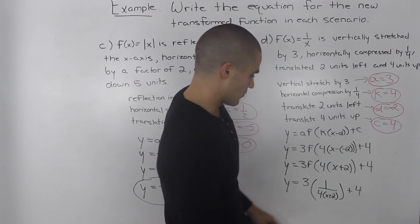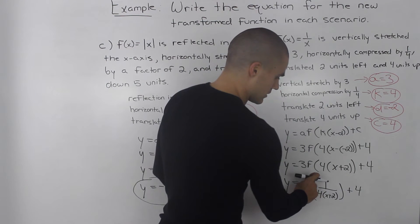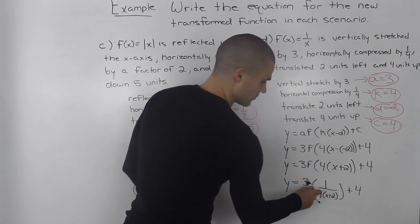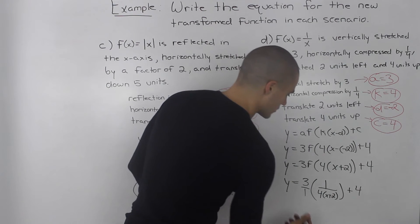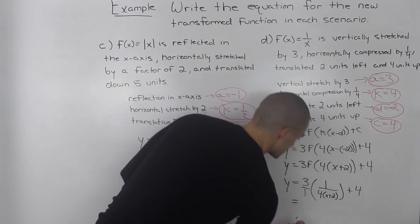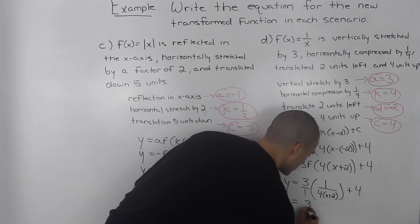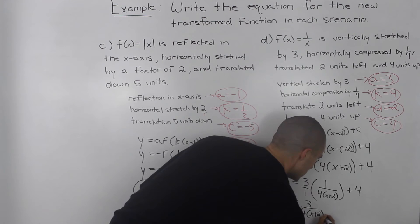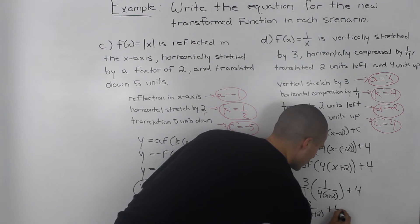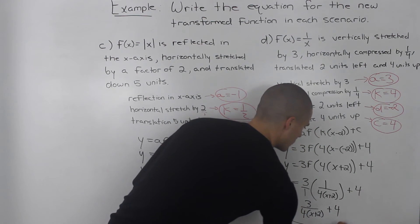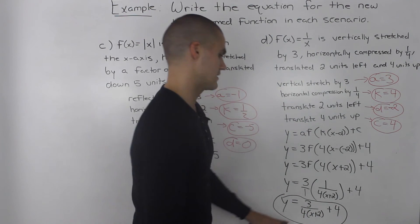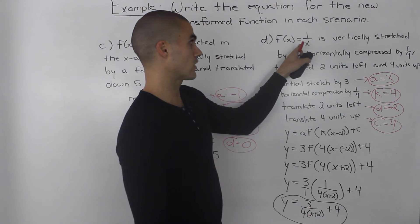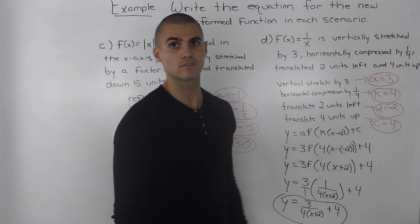We can simplify further by multiplying the 3 into the fraction — it's like 3 over 1 times 1 over the quantity 4 times x plus 2. Multiplying numerators and denominators gives us 3 over 4 times the quantity x plus 2, plus 4. This is our transformed function when the parent function is 1 over x, applied through all of these transformations.